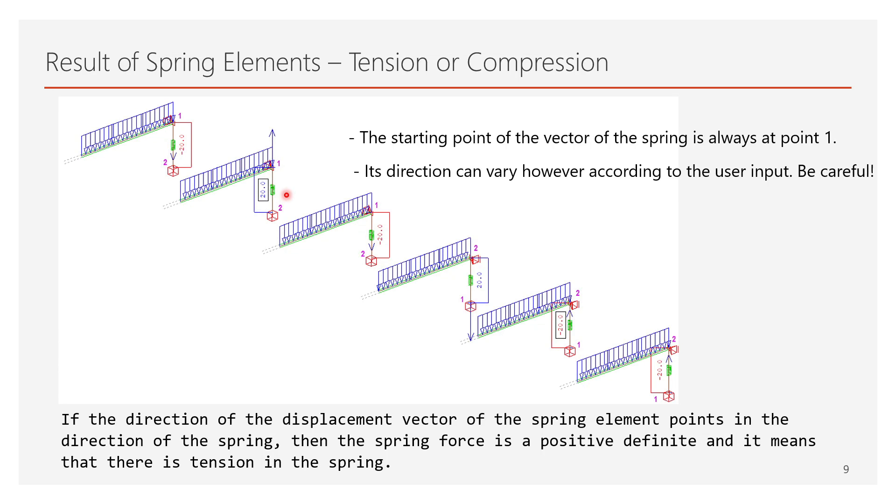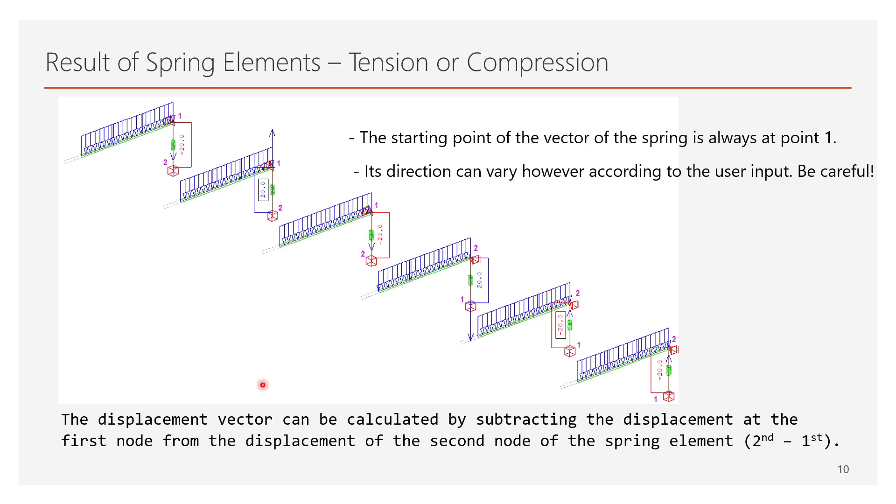If the direction of the displacement vector of the spring element points in the direction of the spring, then the spring force is positive and it means that there is tension in the spring. The displacement vector can be calculated by subtracting the displacement at the first node from the displacement of the second node of the spring element.